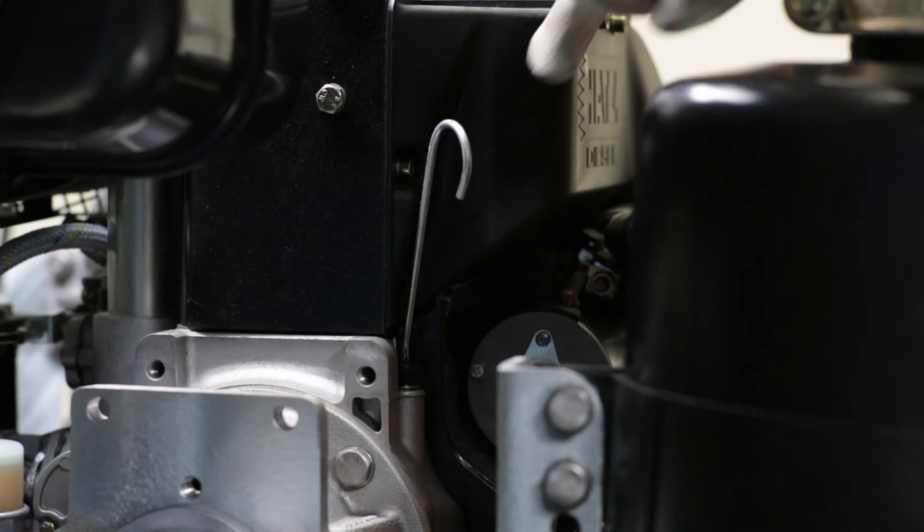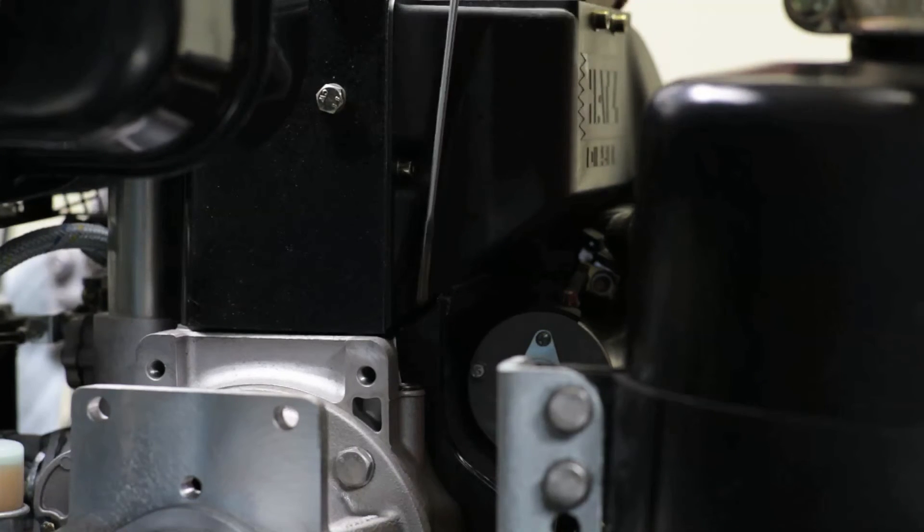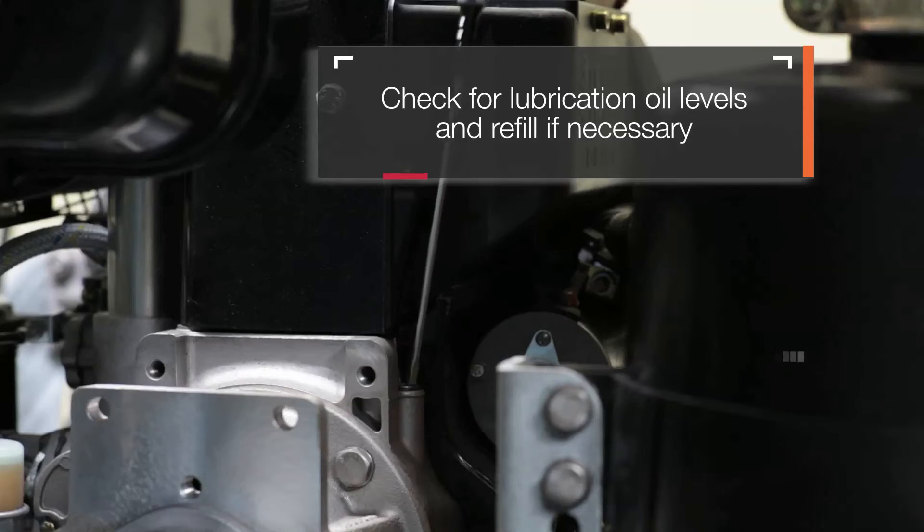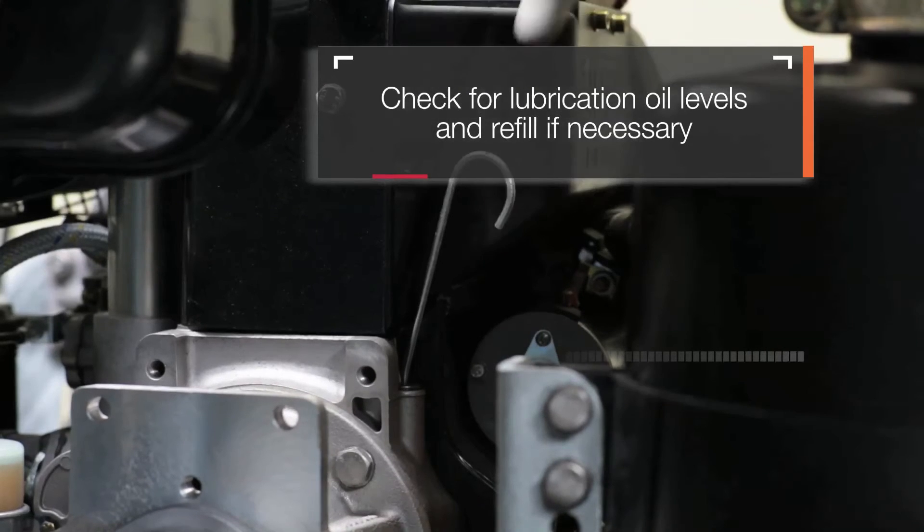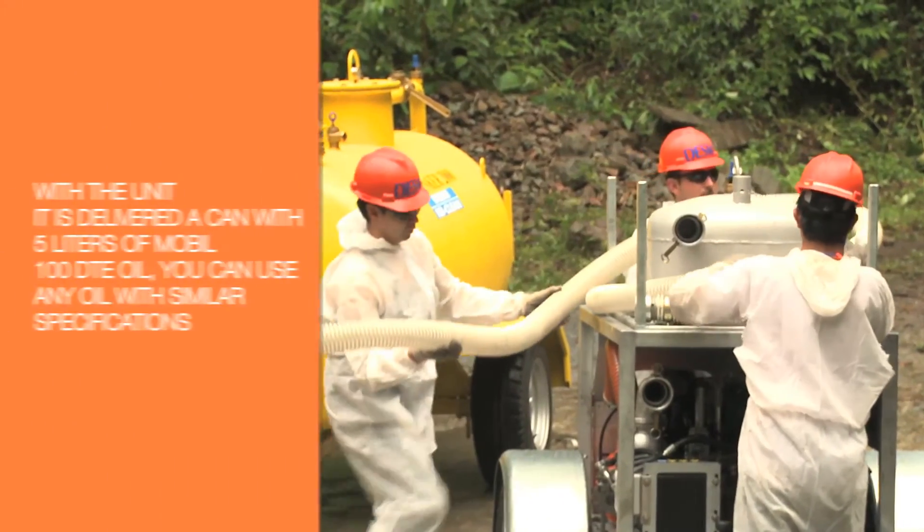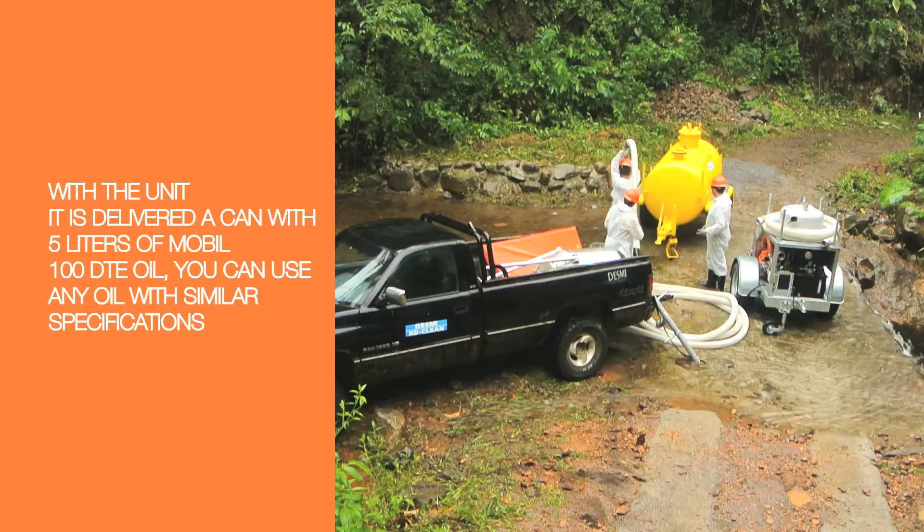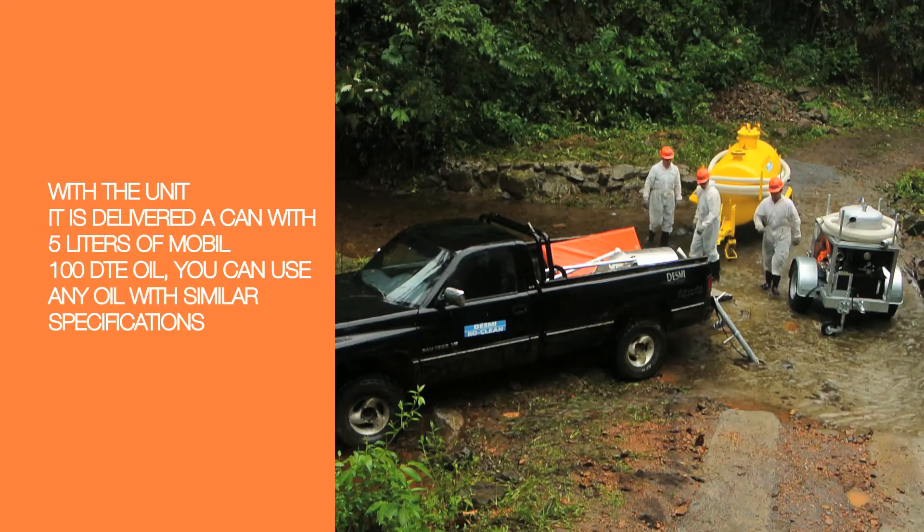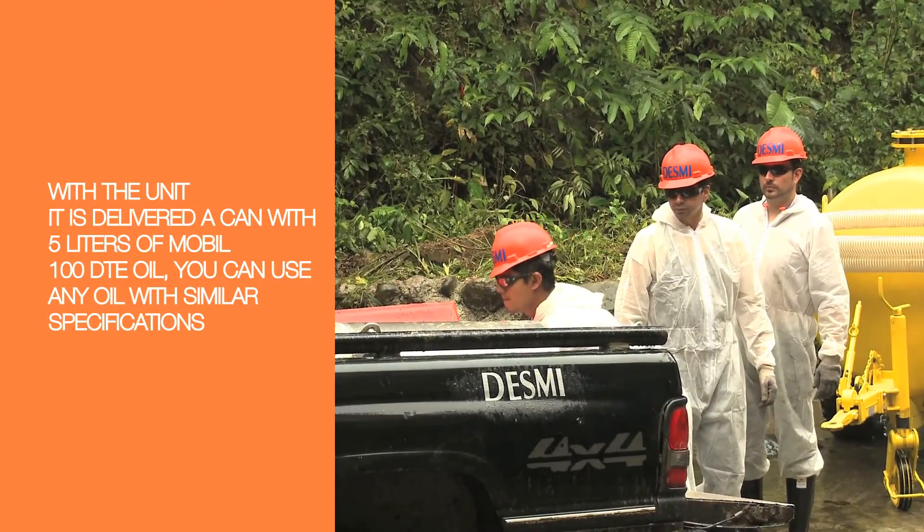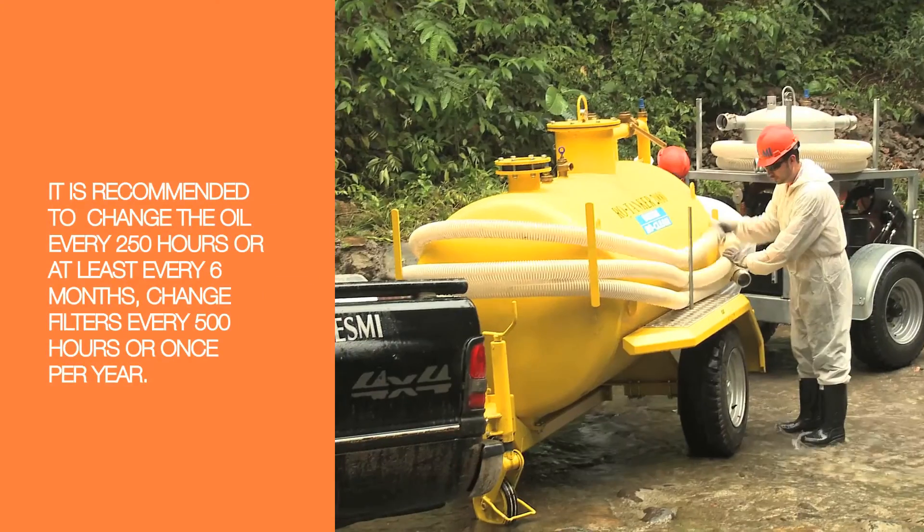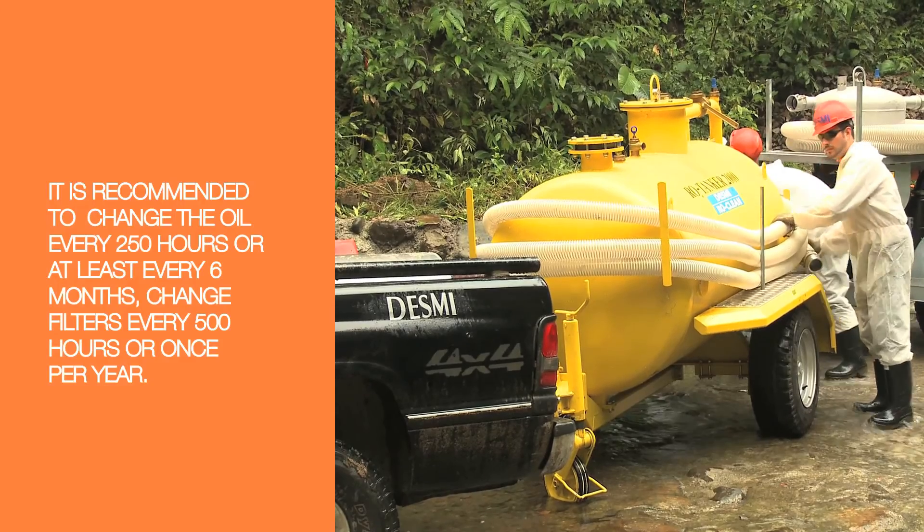Desme also recommends checking the lubrication oil level of the diesel motor, vacuum pump, and plunger pump. Refill them to the maximum level if needed. The unit is delivered with a 5 liter can of Movil 100 DTE oil. You can use any oil with similar specifications. We recommend changing the oil every 250 hours or at least every 6 months. Change filters every 500 hours or once per year.